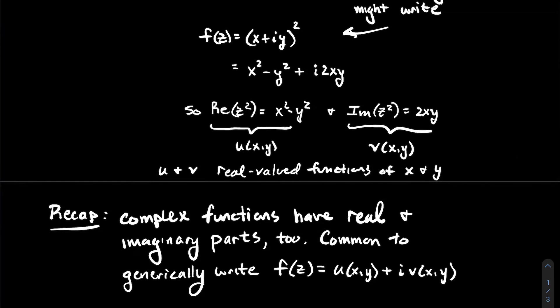So it's very common to just generically write, if you've got a complex function, people sometimes just write it as f of z equals u of xy plus iv of xy. So like in my example up there, instead of z squared, somebody might write it as x squared minus y squared plus i 2xy, where you're really emphasizing what the real and the imaginary parts are.